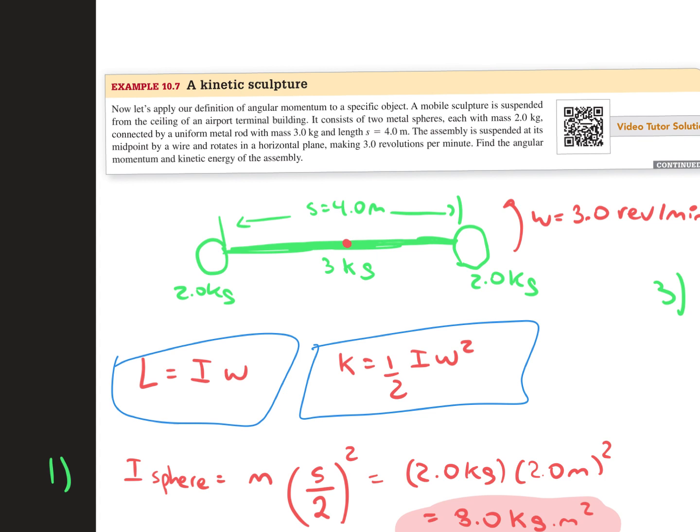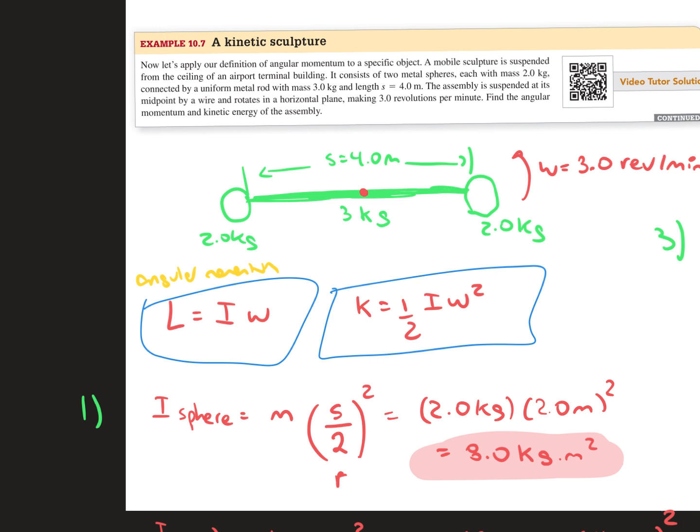So right here we have two masses, 2 kilograms each, the rod right here which is 3 kilograms, and then the distance being 4 meters.